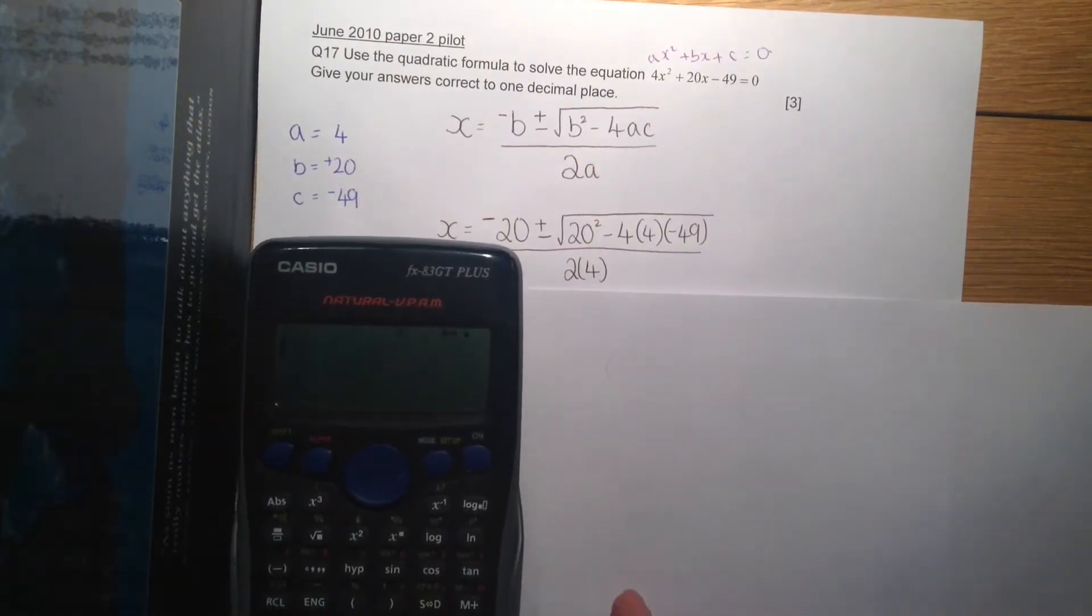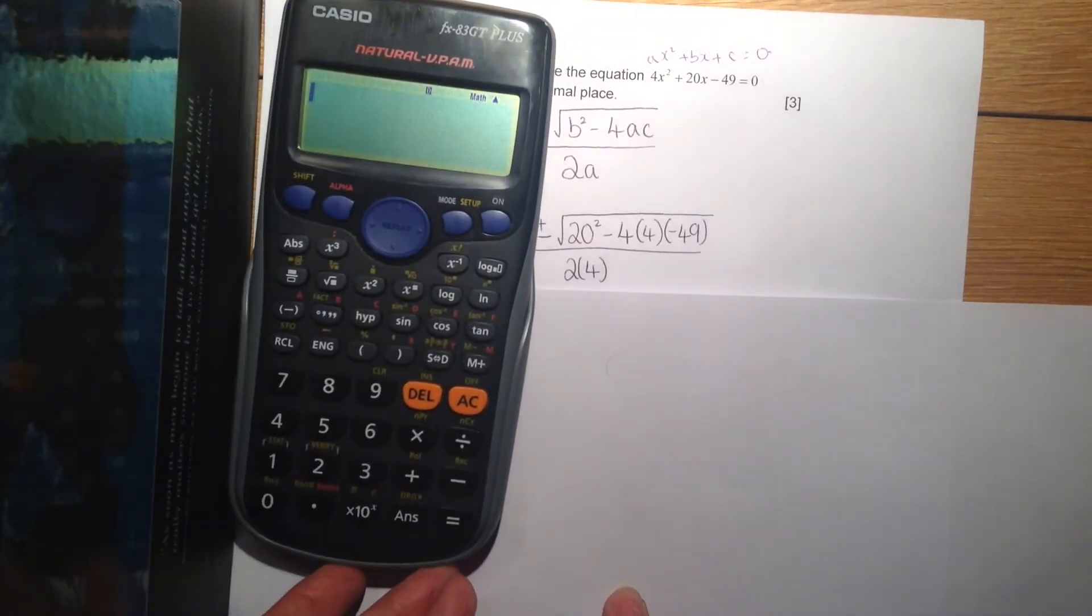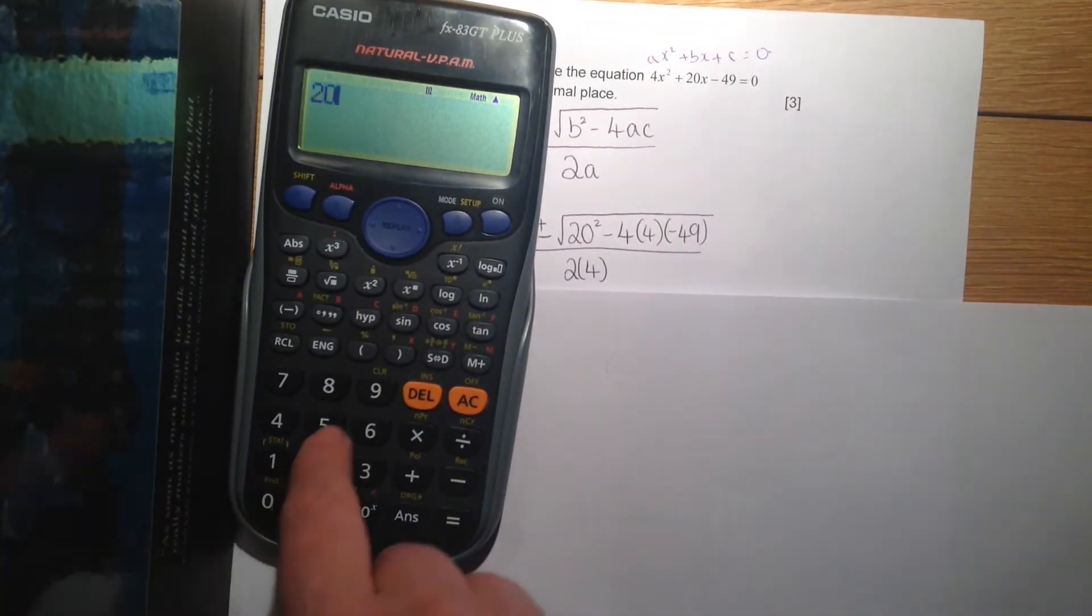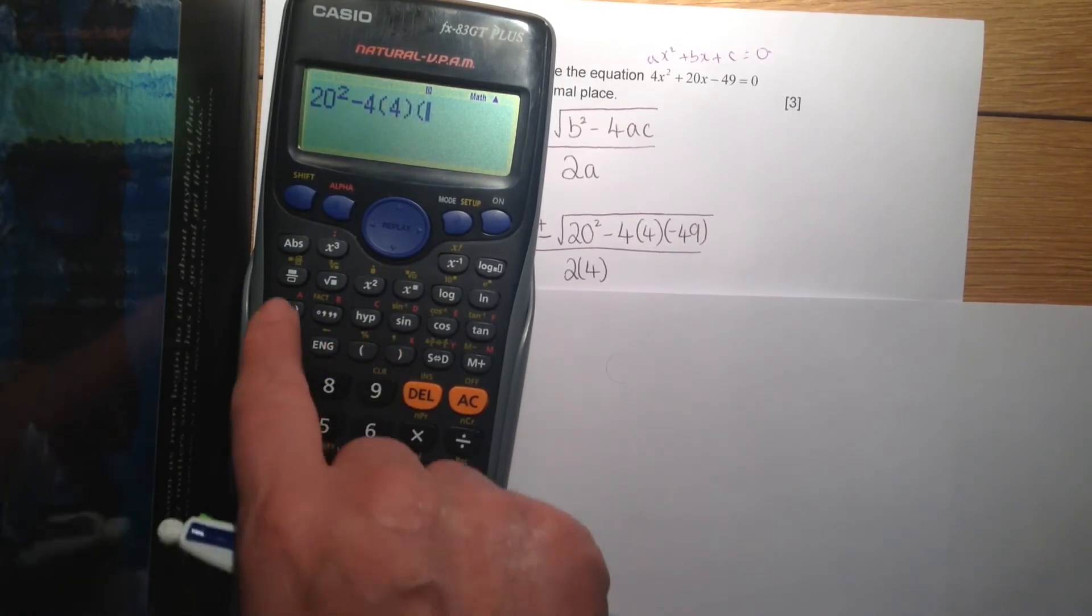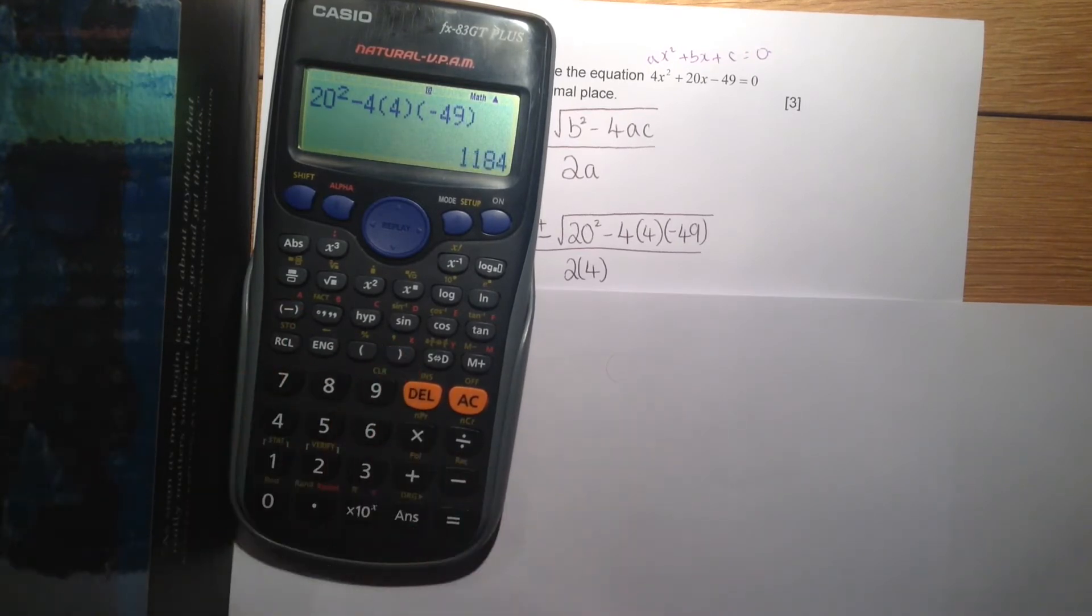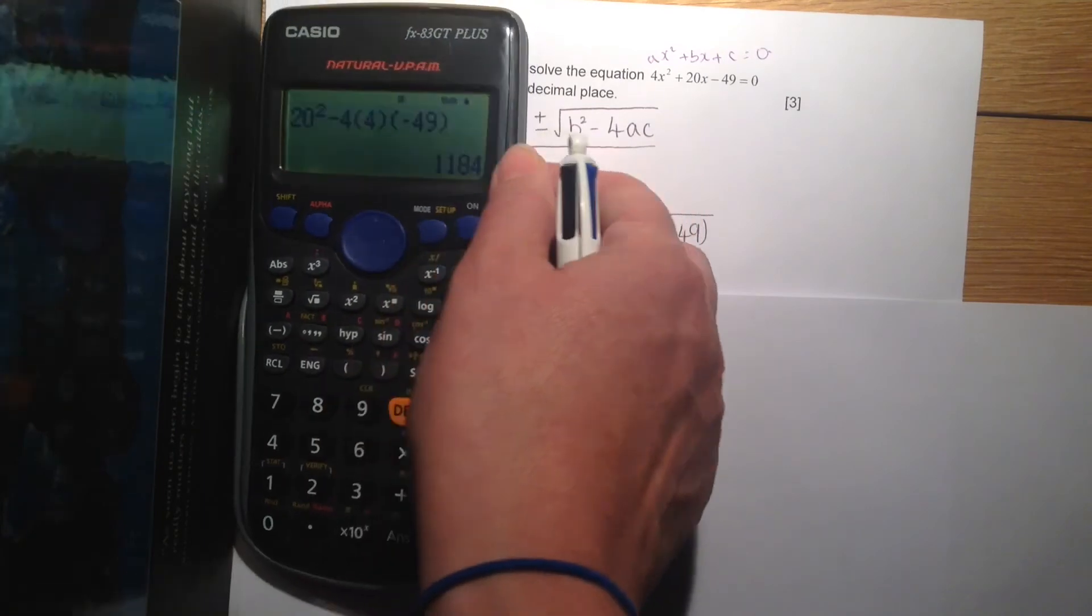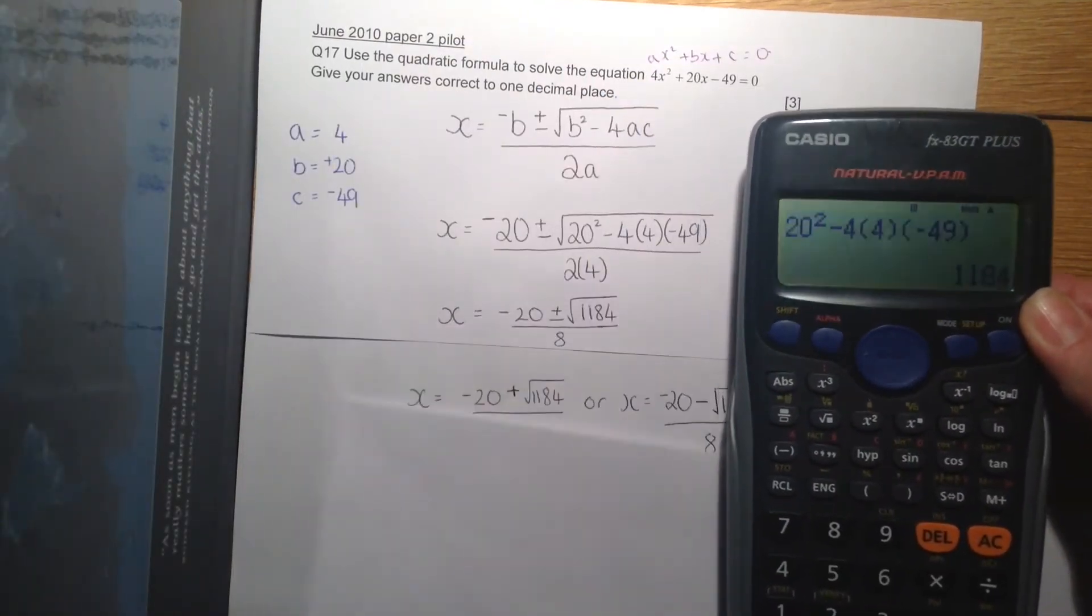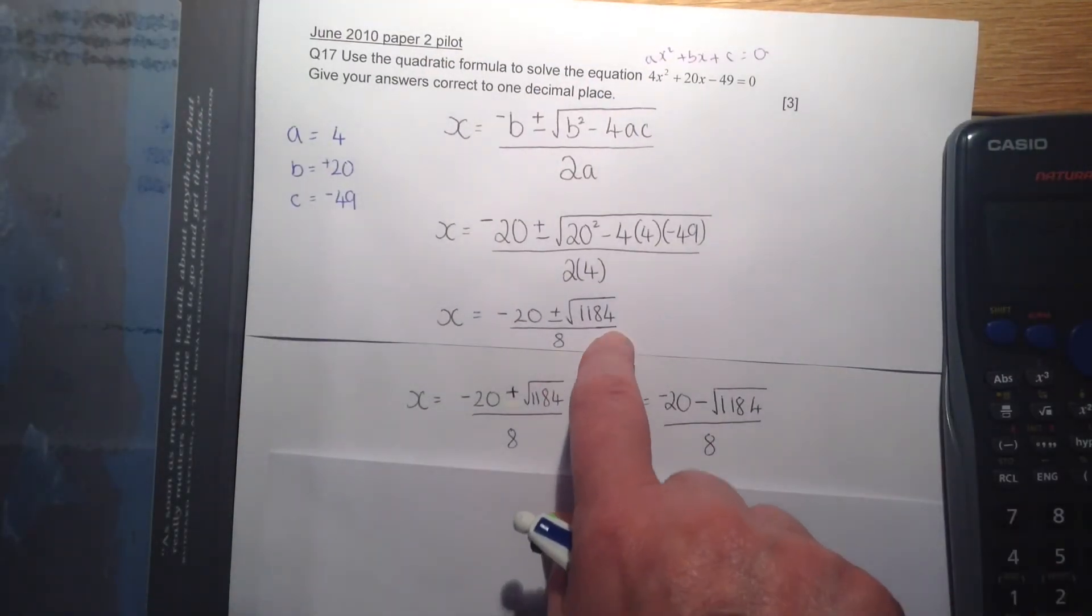We're going to do 20 squared minus 4 bracket 4 bracket minus, it's that minus remember, 49 equals. So that gives me this part.